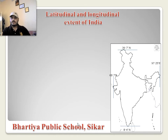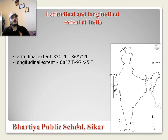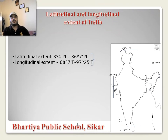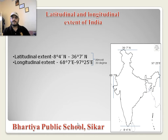The eastern longitude of India near Arunachal Pradesh is 97 degree 25 minute east. So the latitudinal extent of India is 8 degree 4 minute to 36 degree 7 minute north, and the longitudinal extent of India is 68 degree 7 minute to 97 degree 25 minute east. It is almost about 30 degrees from north to south and east to west.